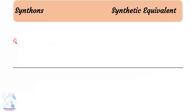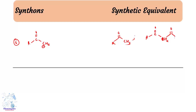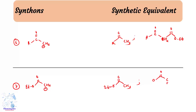The sixth synthon is R–C(=O)–CH₂⁻. Two main synthetic equivalents for this are: (1) R–C(=O)–CH₃ (a methyl ketone), and (2) R–C(=O)–CH₂–C(=O)–OEt (a β-ketoester). Another related synthon is EtO–C(=O)–CH₂⁻, with synthetic equivalents including CH₃–C(=O)–OEt and EtO–C(=O)–CH₂–C(=O)–OEt (diethyl malonate) with appropriate ethyl and methyl groups.